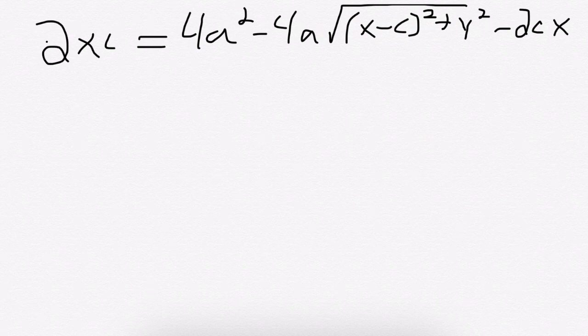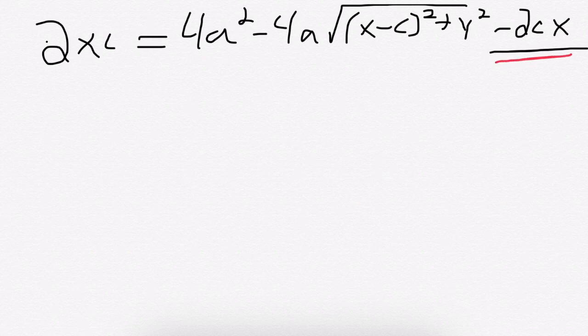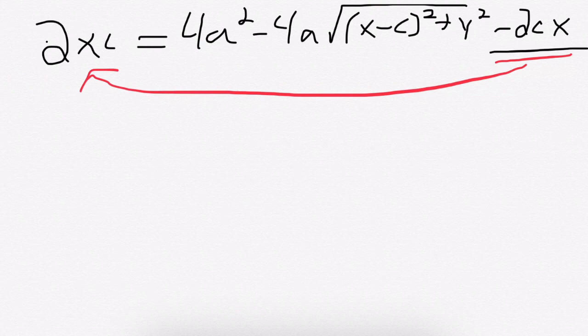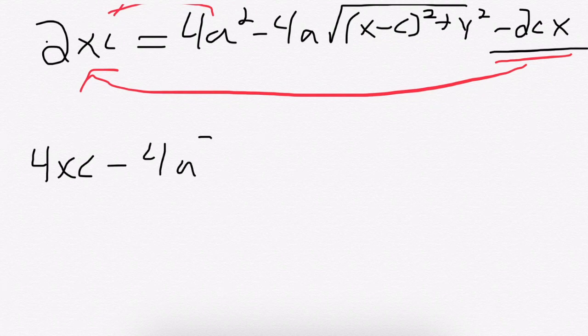So I've cleaned up what I had a little bit, just writing all the terms that so far haven't canceled. I have this negative 2xc over here. What I'm going to do is I'm going to move it to the right-hand side, because it's going to combine with this 2xc, and I'm also going to move the 4a squared over, just to isolate the square root. And so what we get is 4xc minus 4a squared, and that's going to equal negative 4a times the square root.